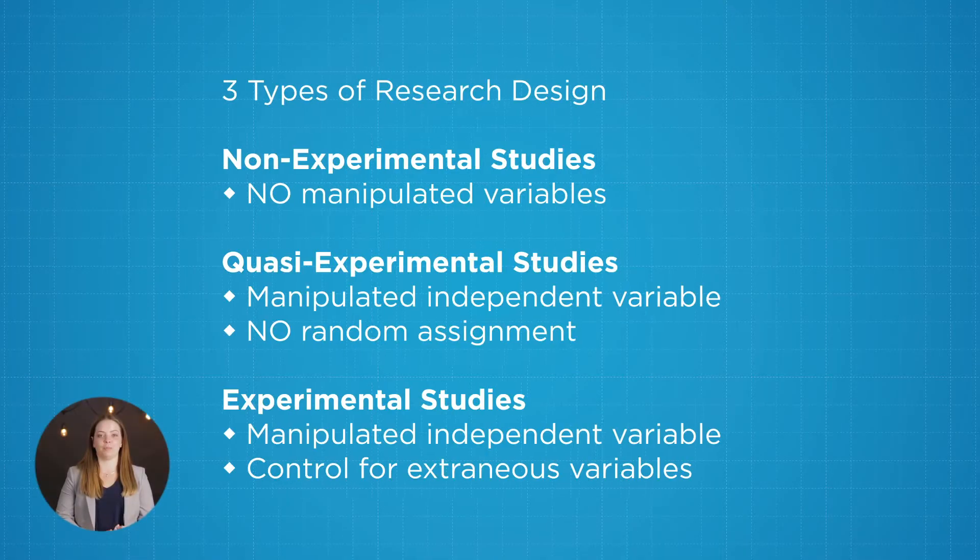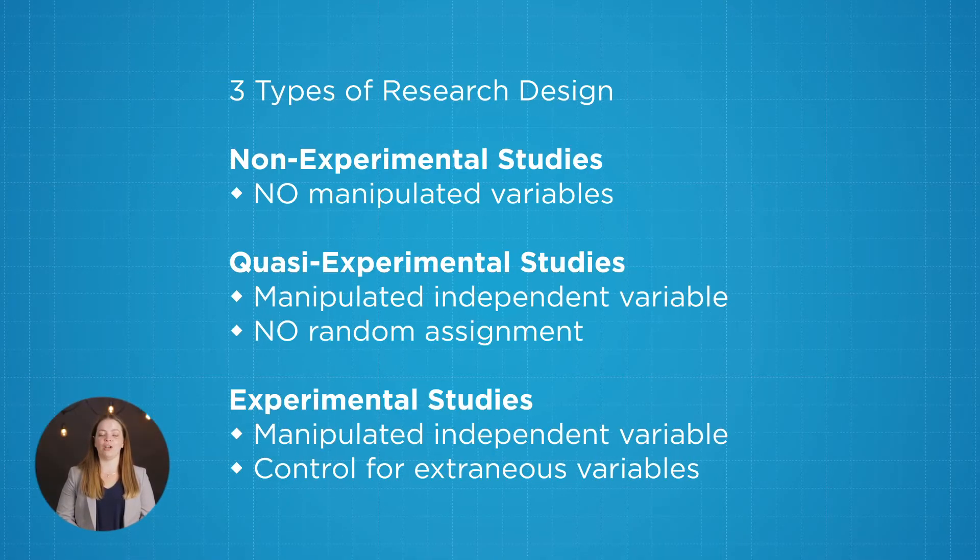Now we're going to start by talking about the three overarching types of research design. The three main types are experimental, non-experimental, and quasi-experimental.